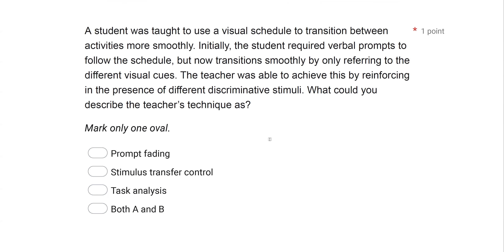A student was taught to use a visual schedule to transition between activities more smoothly. Initially, the student required verbal prompts to follow the schedule, but now transitions smoothly by only referring to different visual cues. The teacher was able to achieve this by reinforcing in the presence of different discriminative stimuli. What could you describe the teacher's technique as? This question sounds more technical than it really is. The student initially needed verbal prompts but now only needs visual cues — going from needing certain prompts to not needing them.